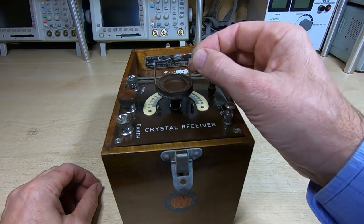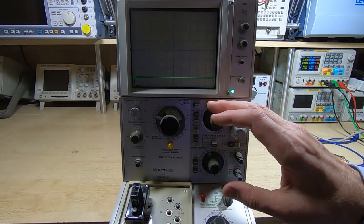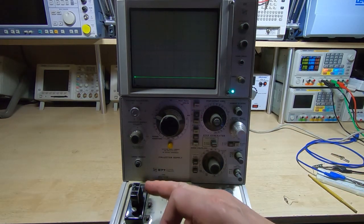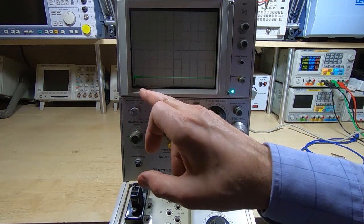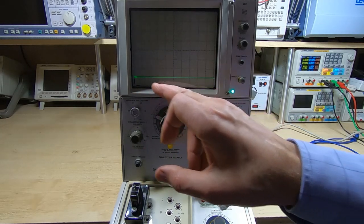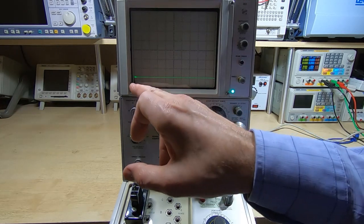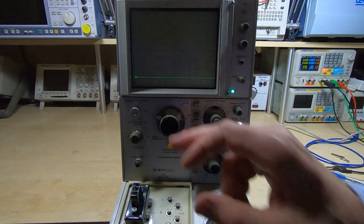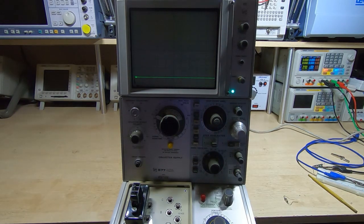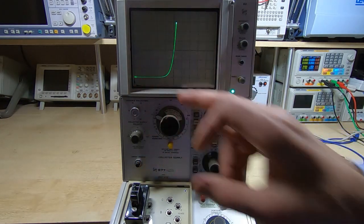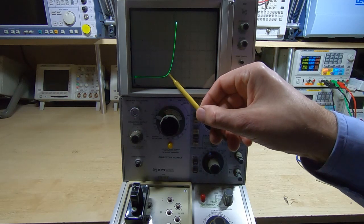I've got my 577 curve tracer set up. Currently I have a silicon diode inserted and I've got the tracer set up to apply voltage across the diode. We're going to be looking at the forward voltage drop through the diode. We've got zero volts on the left hand side of the trace and I've got it set up for 0.1 volts per division.